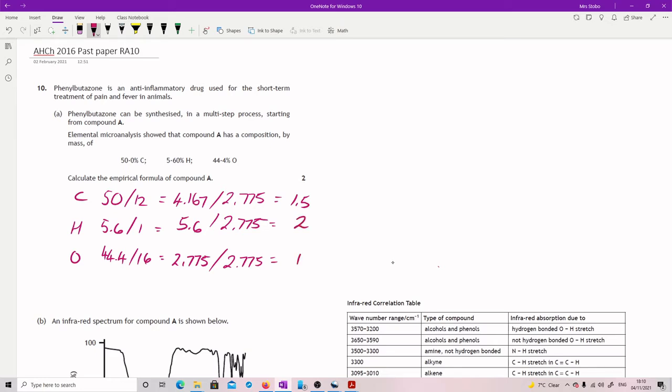Now you can't have half inside your formulas so I'm going to have to double up the whole thing. So I'm going to end up with carbon at 3, hydrogen at 4 and oxygen at 2. We want the empirical formula so you're going to write it down as C3H4O2. Two marks.